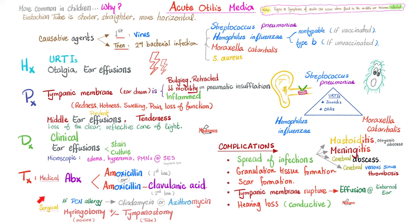Management: medical versus surgical. Medical: antibiotics. Most patients benefit from amoxicillin as first line. If that doesn't help, try amoxicillin with clavulanic acid, which provides broader coverage because clavulanic acid is a beta-lactamase (penicillinase) inhibitor. If the patient is allergic to penicillins, give clindamycin or azithromycin. Surgical options for recurrent or chronic otitis media include myringotomy — cutting an incision in the eardrum so effusions can escape — or placement of a tympanostomy tube to drain effusions.